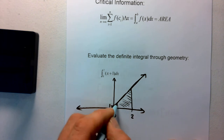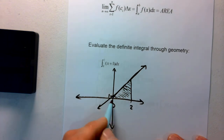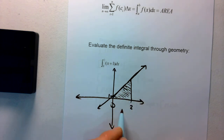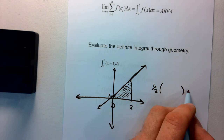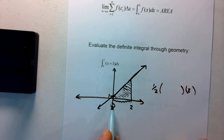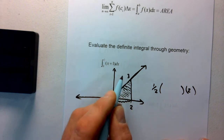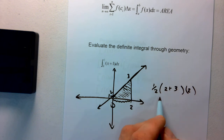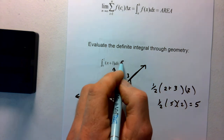We're looking at the region from 0 to 2 of f(x) = x+1, and we ended the last video talking about this geometry — we have a trapezoid. The trapezoid area formula is one-half times the two bases added together times the height. The height is delta x, which is 2. Plugging in: f(0)=1, f(2)=3, so area = one-half times (1+3) times 2... wait, f(1)=2 and f(2)=3, so it's one-half of 5 times 2 = 5. The integral from 0 to 2 of (x+1) dx equals 5.